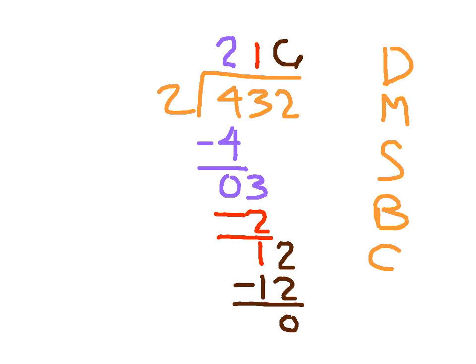We could do our check of 216 times two to make sure our answer is correct as well. And believe me, it is. There we go. It checks. So again, you'll just have one more step to do at this point because you'll have to bring down another digit so that we end up getting a three-digit quotient.